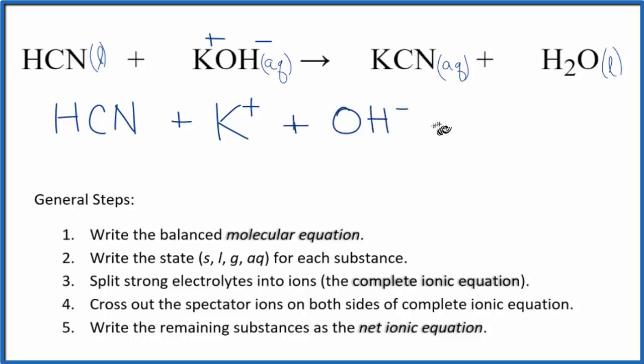Those are the reactants. For the products, we said this was plus minus and that's a liquid, we won't split that apart. We have K plus, plus the cyanide ion CN minus, plus H2O, that's the water. So this is what we call the complete or total ionic equation.